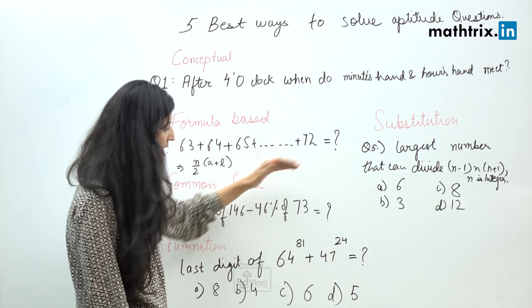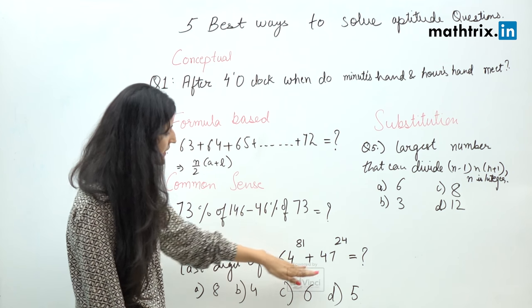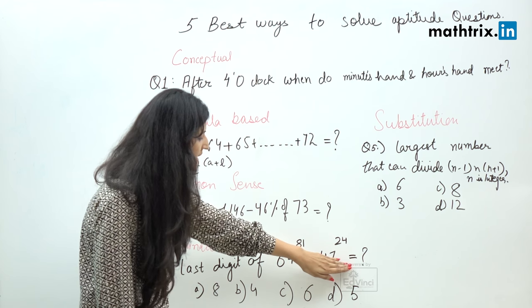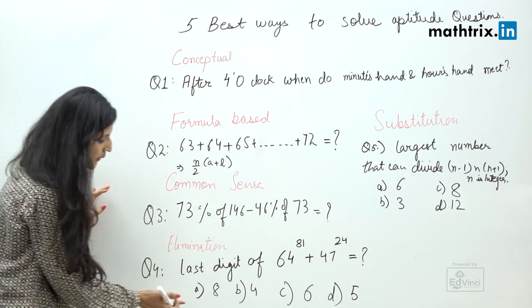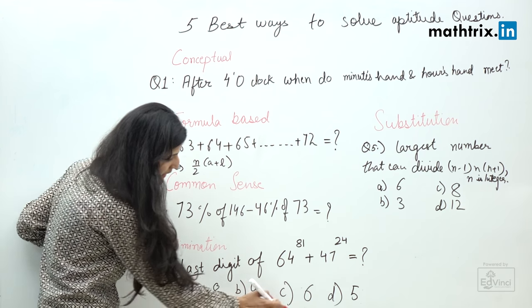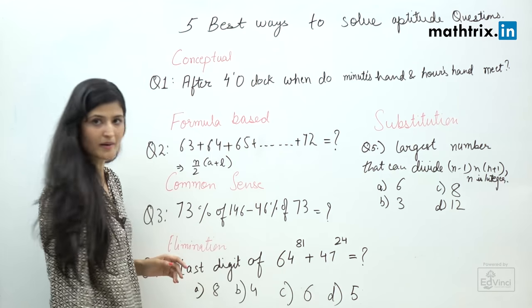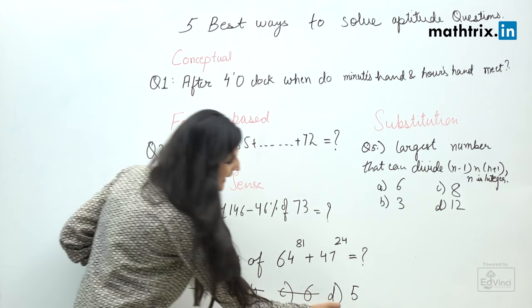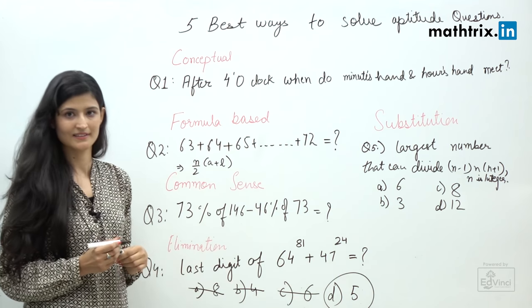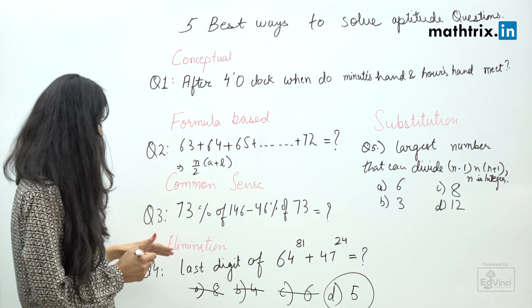When we add an even number and an odd number, it will always give us an odd number. If you just look at the answers, we have all even numbers except one odd number, so we just have to eliminate these three and find the right answer. With this way, we use the elimination method and find our answers.